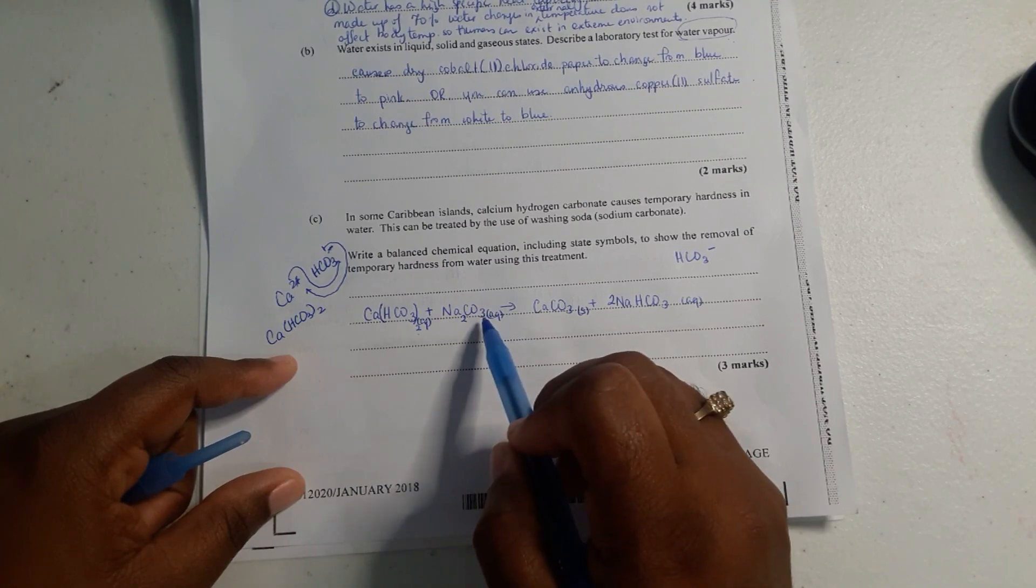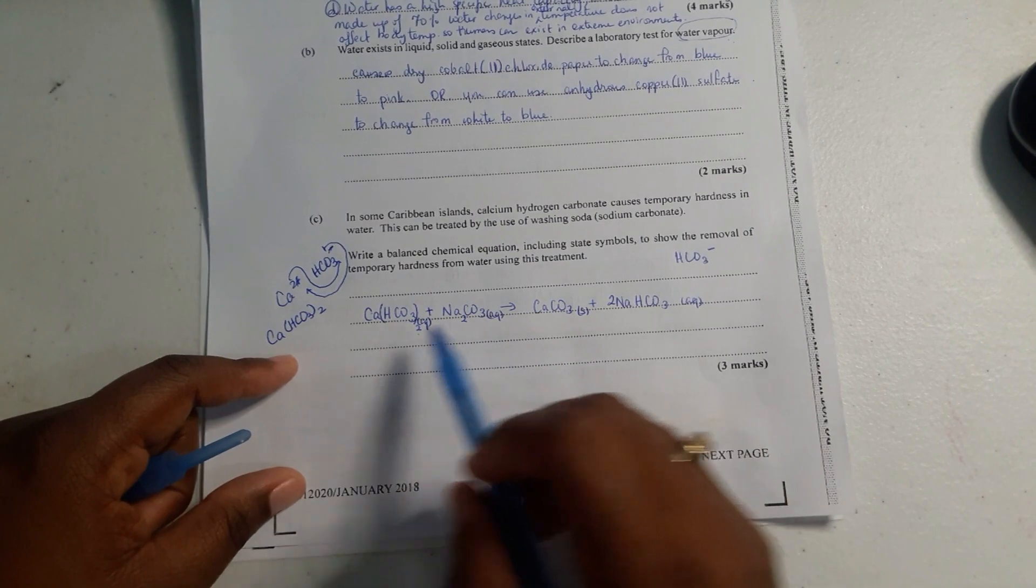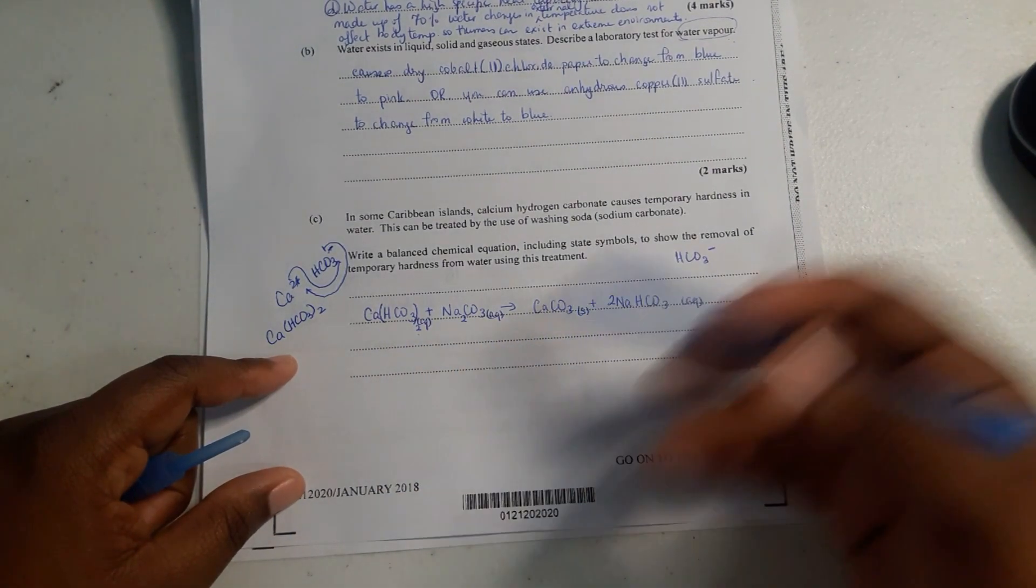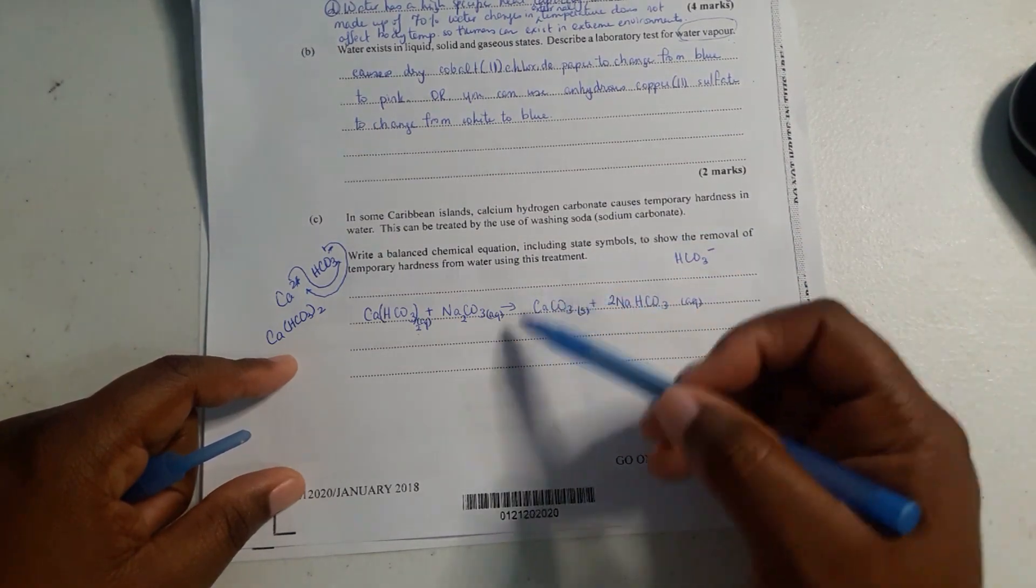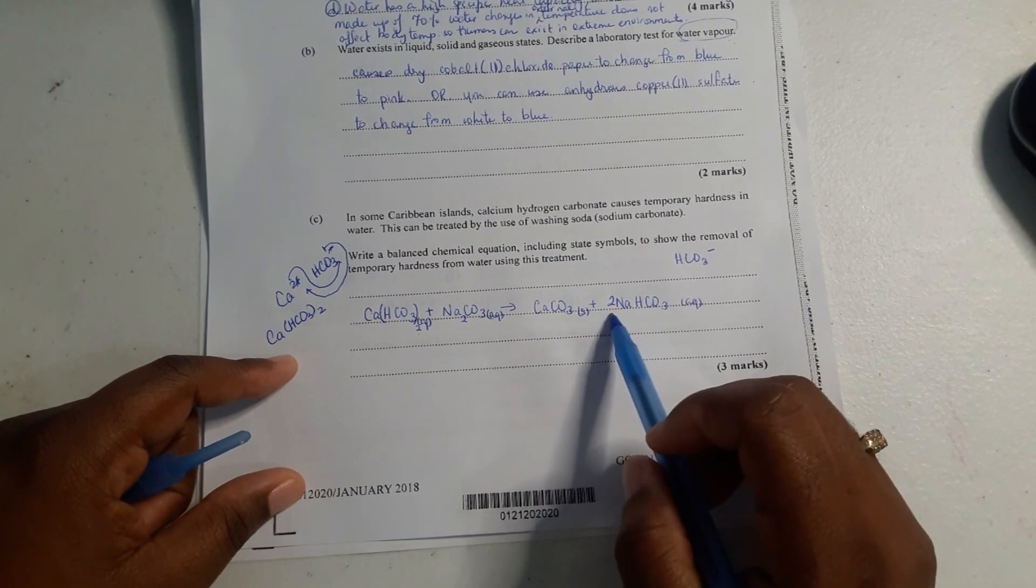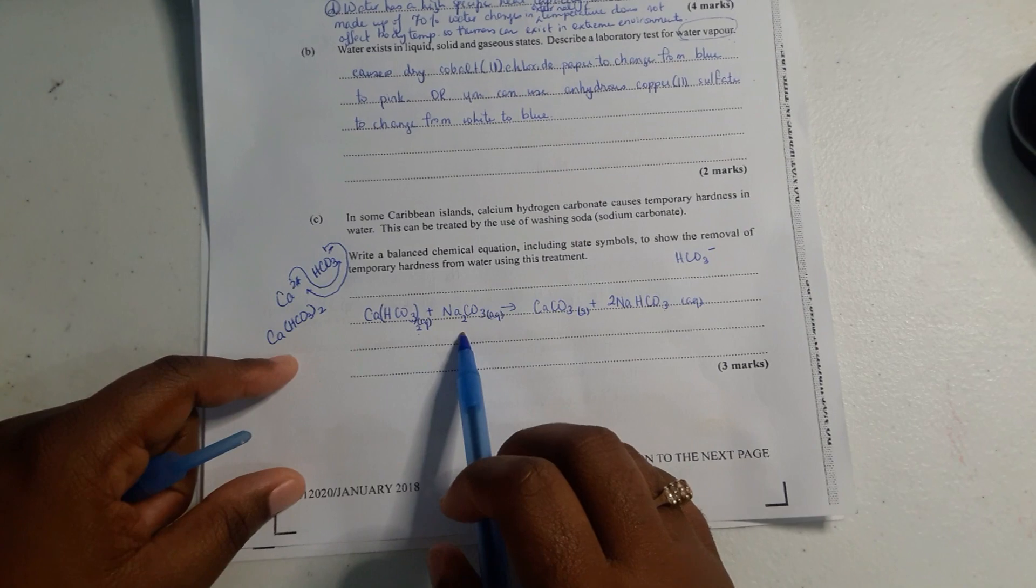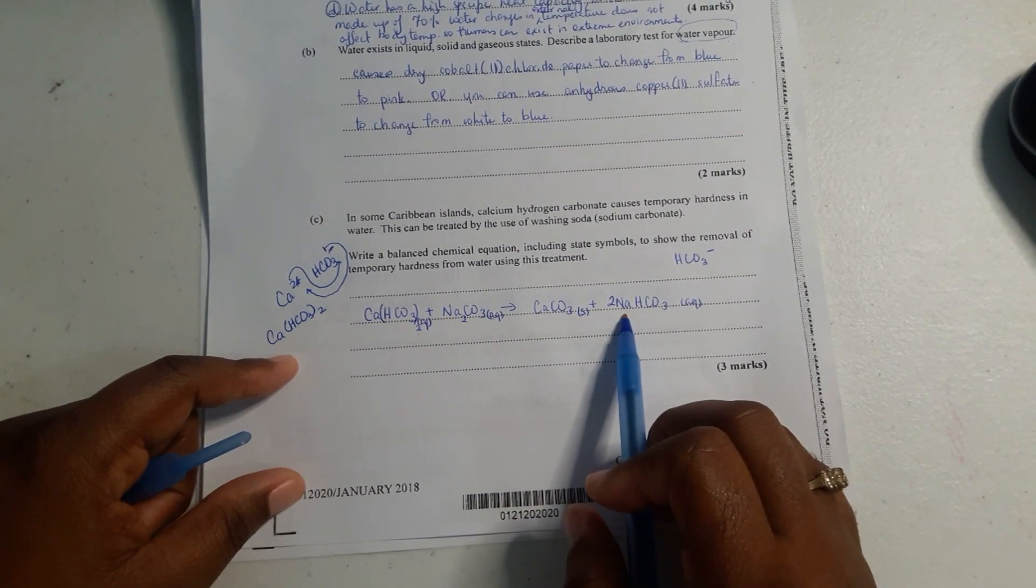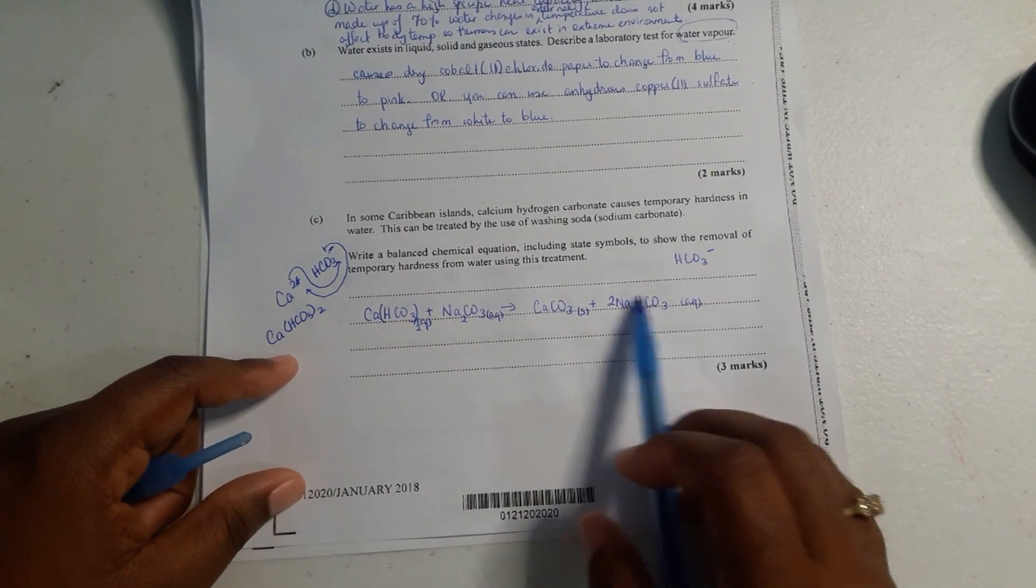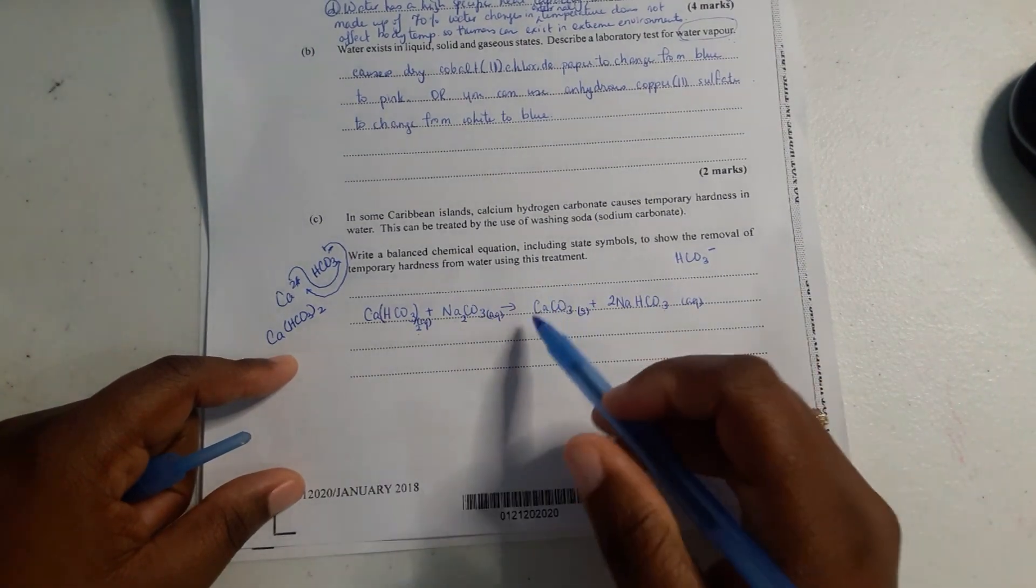And then we have sodium carbonate which is also aqueous. When they bond, you get a salt, calcium carbonate, which washes away. That's the removal of the hardness. And then this reacts with the hydrogen carbonate anion to get sodium hydrogen carbonate. We balance it out. We have two sodium atoms here, we have two here. We have two hydrogen carbonate anions, we have two here. And then we have the CO3 that went over the same way and the calcium which is just one.